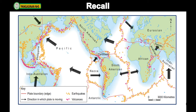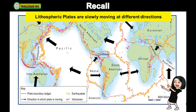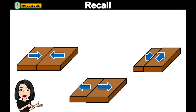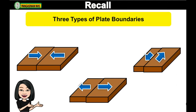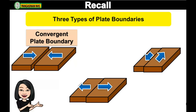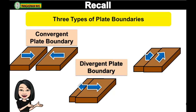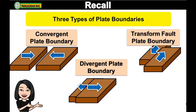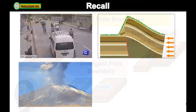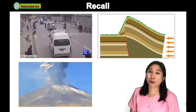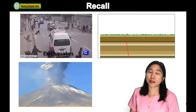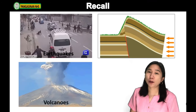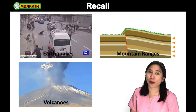You have learned from our previous lesson that lithospheric plates are slowly moving in different directions. This movement of plates can be classified into three types of plate boundaries: convergent plate boundary, divergent plate boundary, and transform fault plate boundary. Along the plate margins, earthquakes, volcanoes, and mountain ranges are being formed.